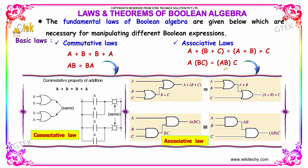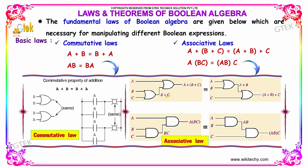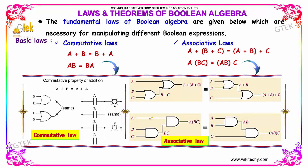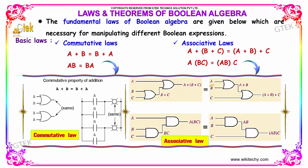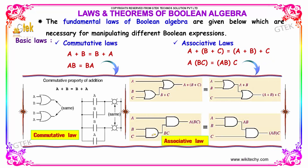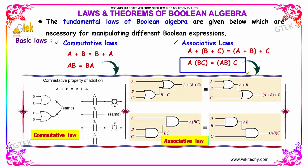Next we have the associative law. So a plus b plus c is equal to a plus b plus c — that is referred to as associativity. Similarly, a into b times c is equal to a times b into c. That is your associative law.